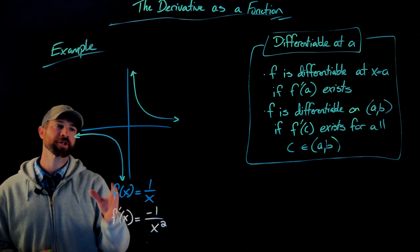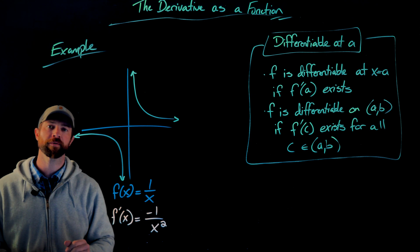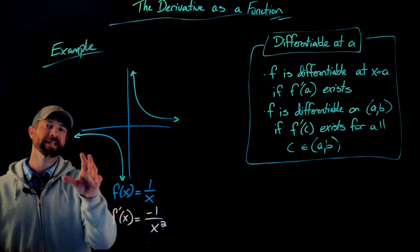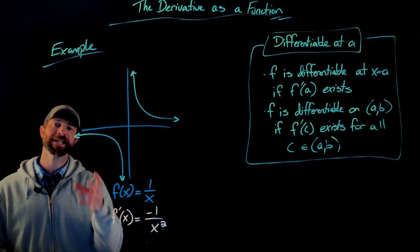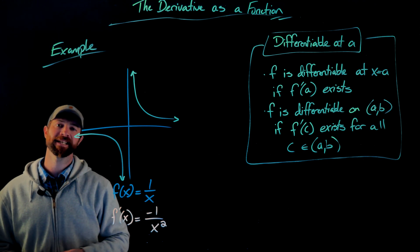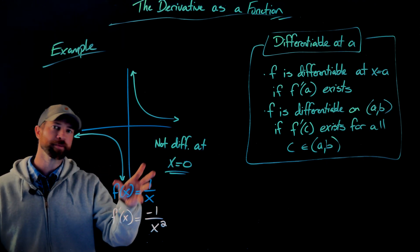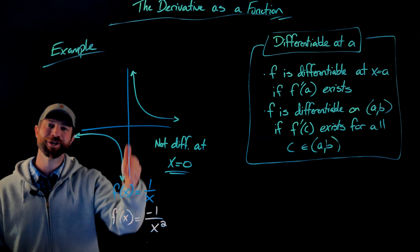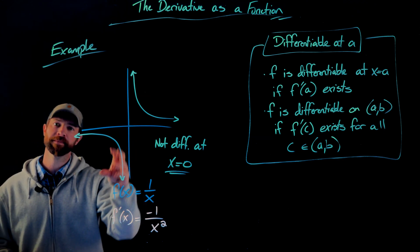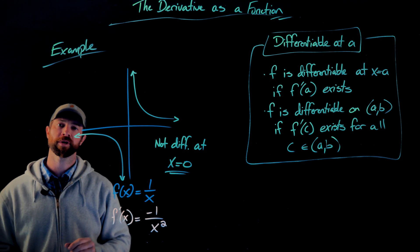All right, so we have a function here. This is the toolkit function one over x. If we look at this, we would actually say this function is not differentiable at x equals zero. Graphically, we say it's not differentiable at x equals zero because this function isn't defined here. You have to be defined and continuous in order to be differentiable.